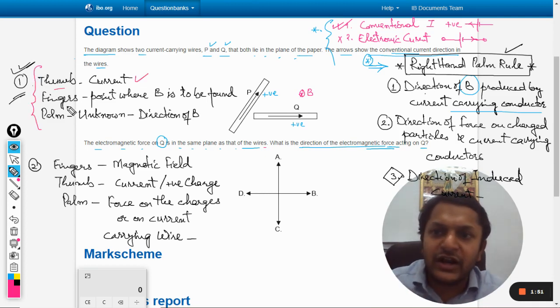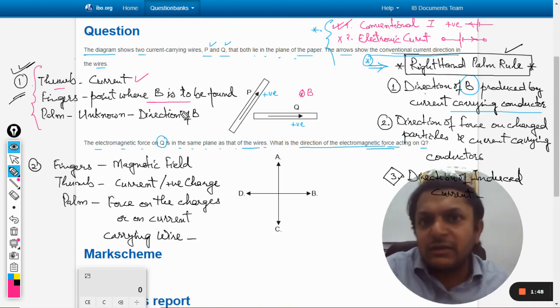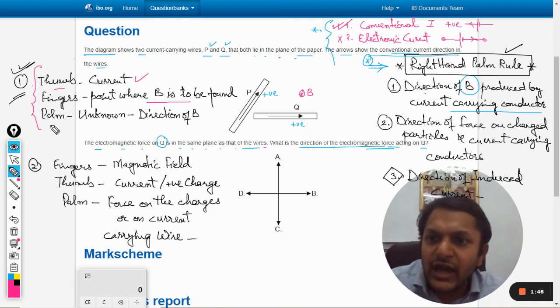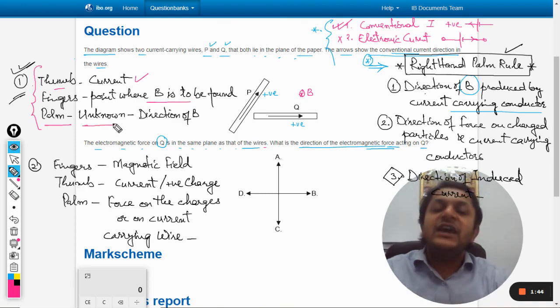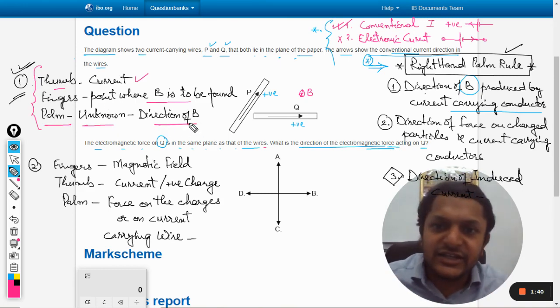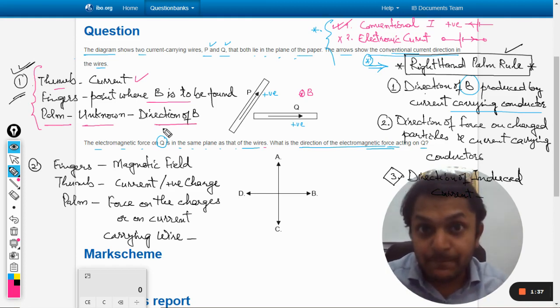Thumb in the direction of current, fingers point towards the point where the magnetic field is to be found, and palm in this case is always finding the unknown variable. In this case it is the direction of B and this is what we have done till now. I am sorry for my speed because the time is very less.